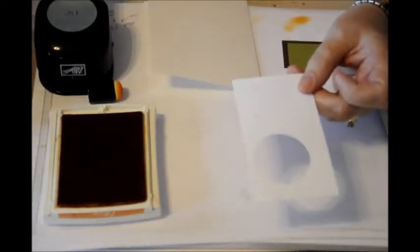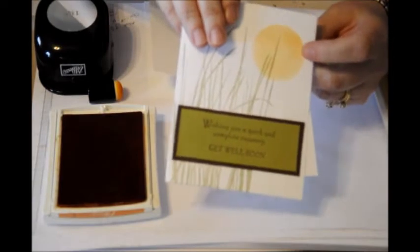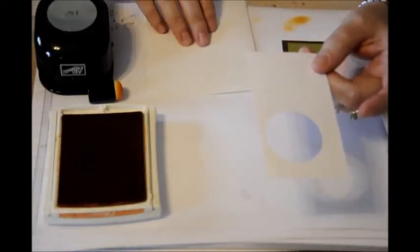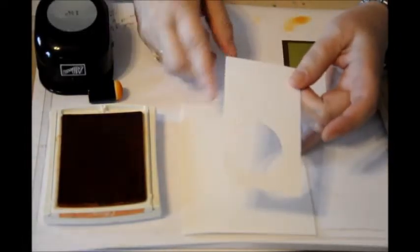What we're going to do is make the sun or the moon, whatever you want to call it, by covering up the cardstock and stamping ink in the circle.